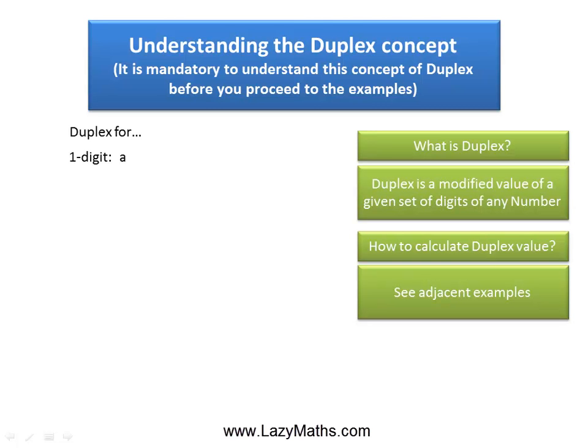If it's a one digit number, as an example is a, the duplex value is simply a squared. So if the number is just 4, the square of 4, which is 16, is the duplex value for 4.